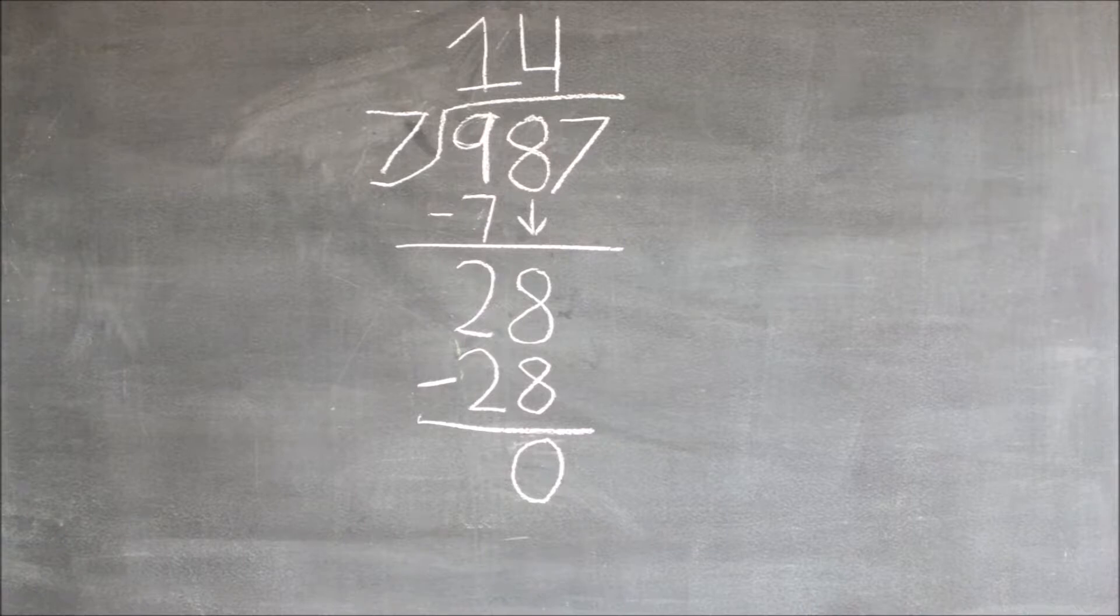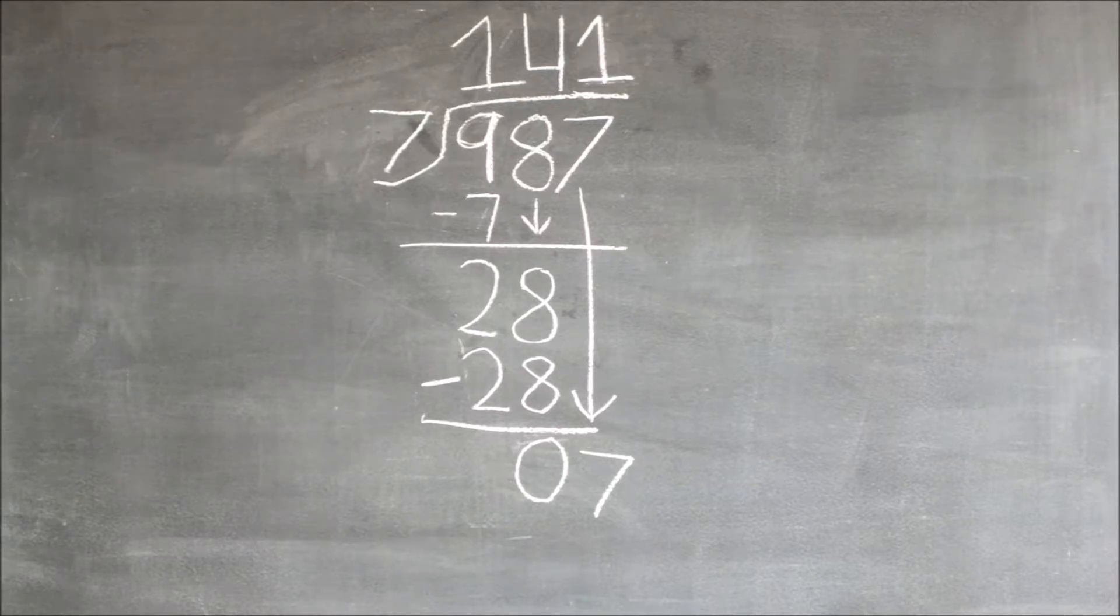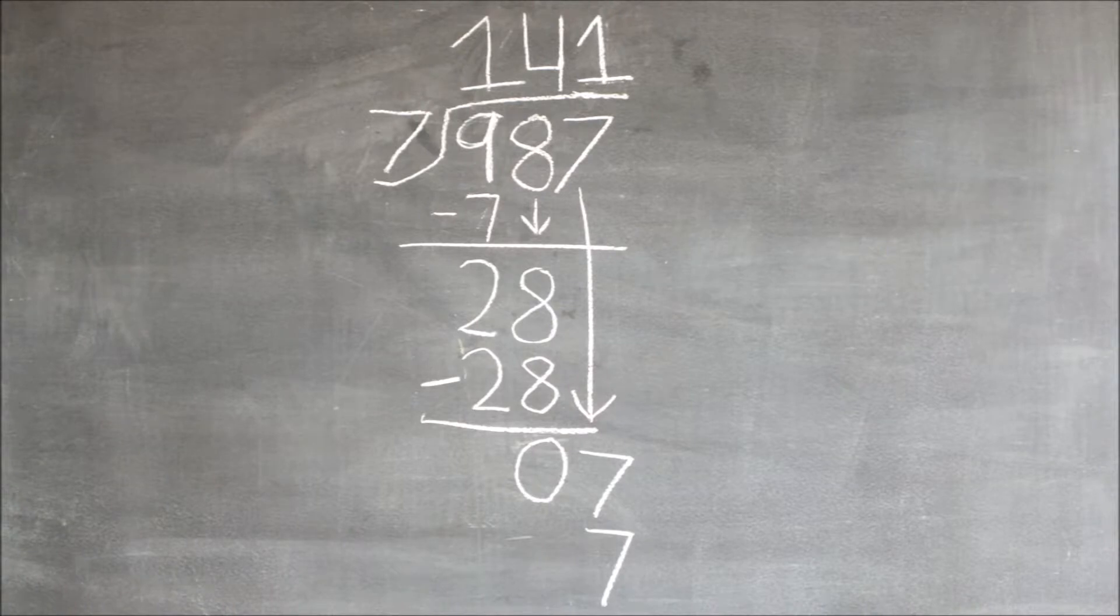But we are not done yet. We still have to bring down the seven. We have brought down the seven. Seven goes into seven only once. Seven times one equals seven, and then we write the seven underneath the seven that we brought down.